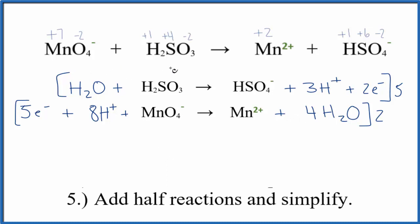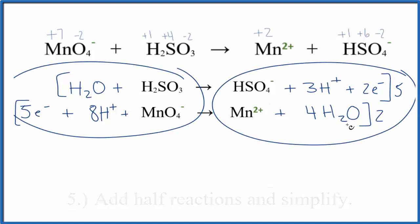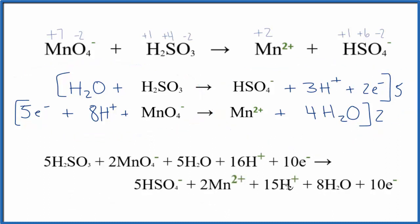This is the balanced redox reaction for MnO4 plus H2SO3. We do need to cross some things out though because they're the same on both sides. Right here I have five waters but I have eight over here, so I can get rid of these and this will become three waters. I see ten electrons, ten electrons. Sixteen hydrogen ions and then fifteen - I'll get rid of these so now I only have one hydrogen ion here. So this ends up being the balanced redox reaction with everything crossed out. We've reduced it down further.